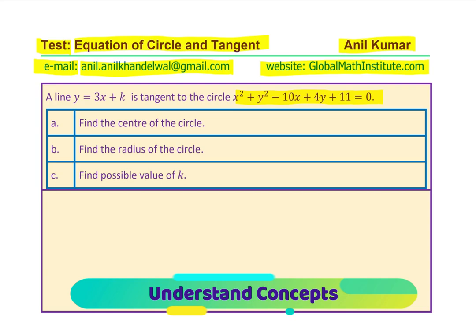Many of you could directly give the answer for parts a and b. Find the center of the circle — some of you would write down straight away that the center of the circle is (5, −2). Similarly, they can also tell the answer for part b. Then, how do we find the possible value of k? That will involve some working with quadratic equations.